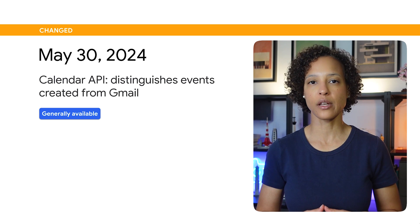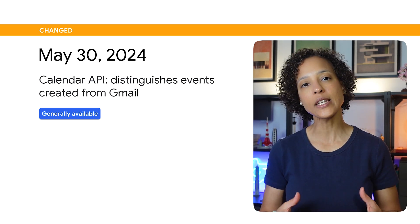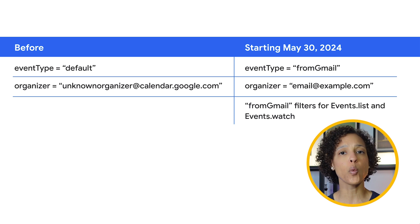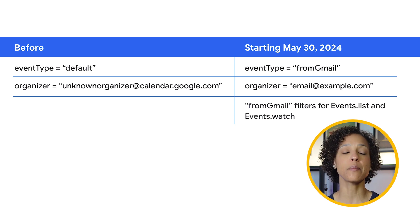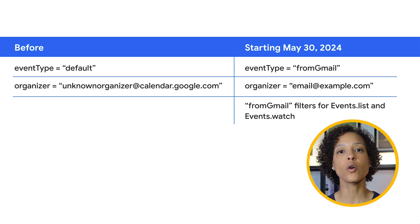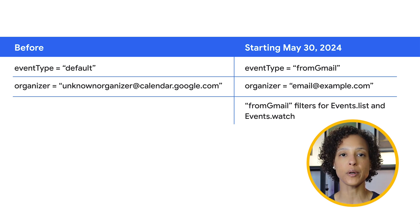Starting May 30, 2024, the Calendar API will distinguish events created from Gmail. Events from Gmail will appear with a new event type from Gmail and include the email recipient as the organizer. Also, from Gmail filters for both events.list and events.watch will be available.